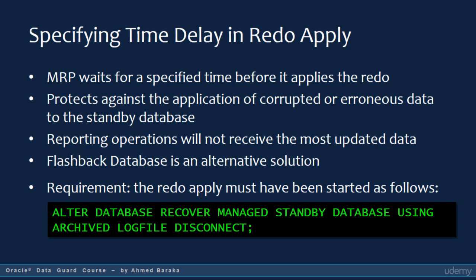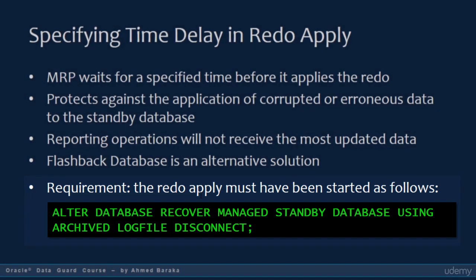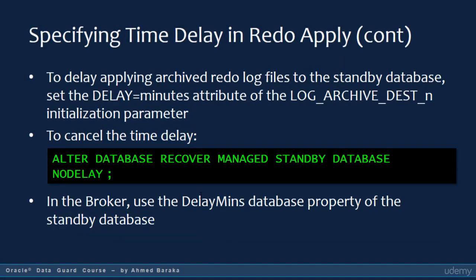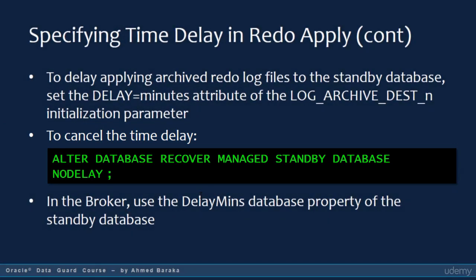If you still want to use the Redo Apply delay feature, you must start the Redo Apply using: ALTER DATABASE RECOVER MANAGED STANDBY DATABASE USING ARCHIVED LOG FILE DISCONNECT. To use the delay option, set the delay attribute of the LOG_ARCHIVE_DEST initialization parameter. To cancel the time delay, issue: ALTER DATABASE RECOVER MANAGED STANDBY DATABASE NO DELAY. If you are using the broker, use the DELAY MINS database property of the standby database.